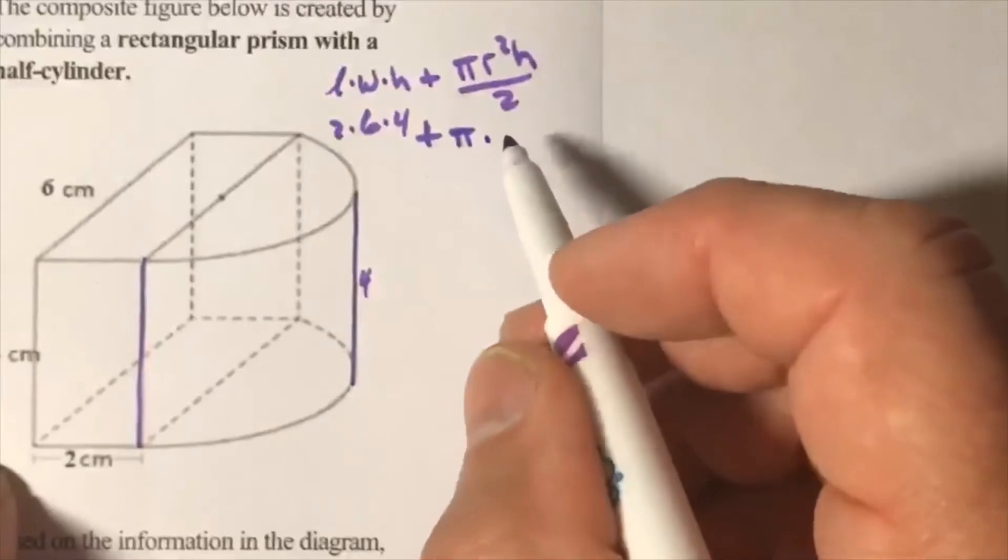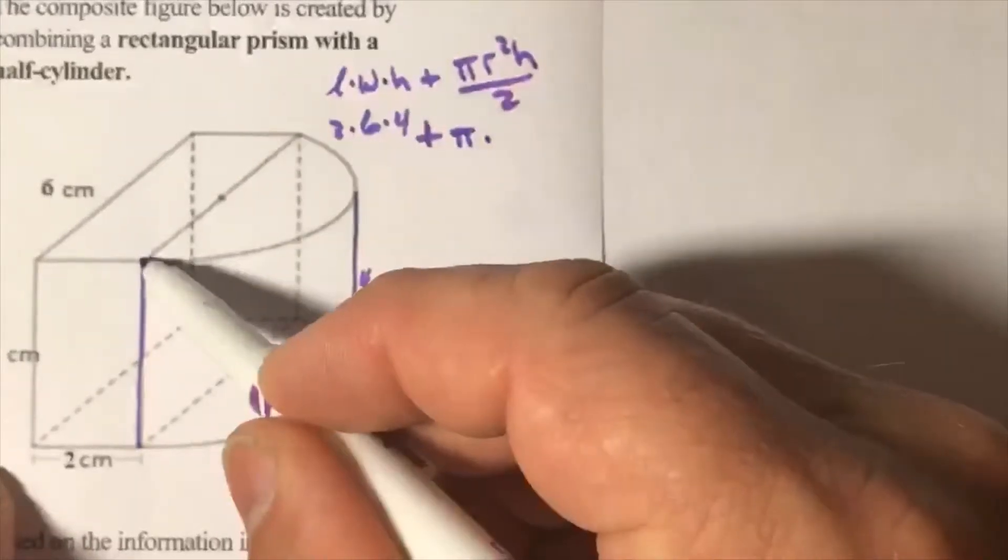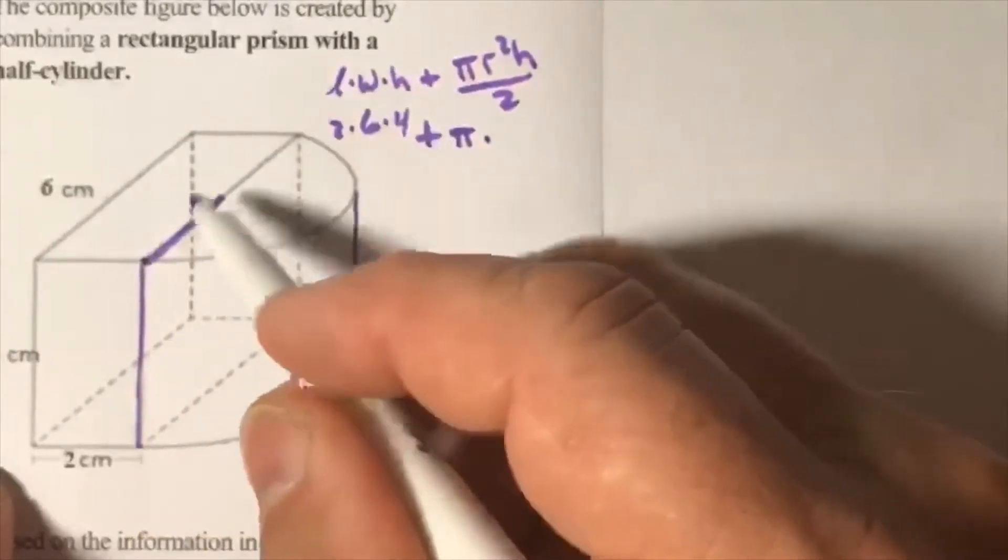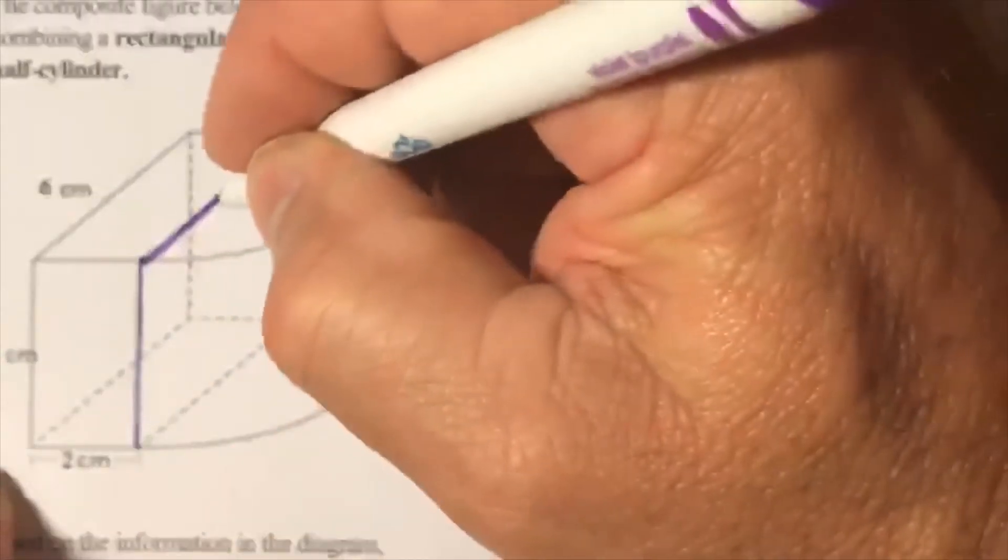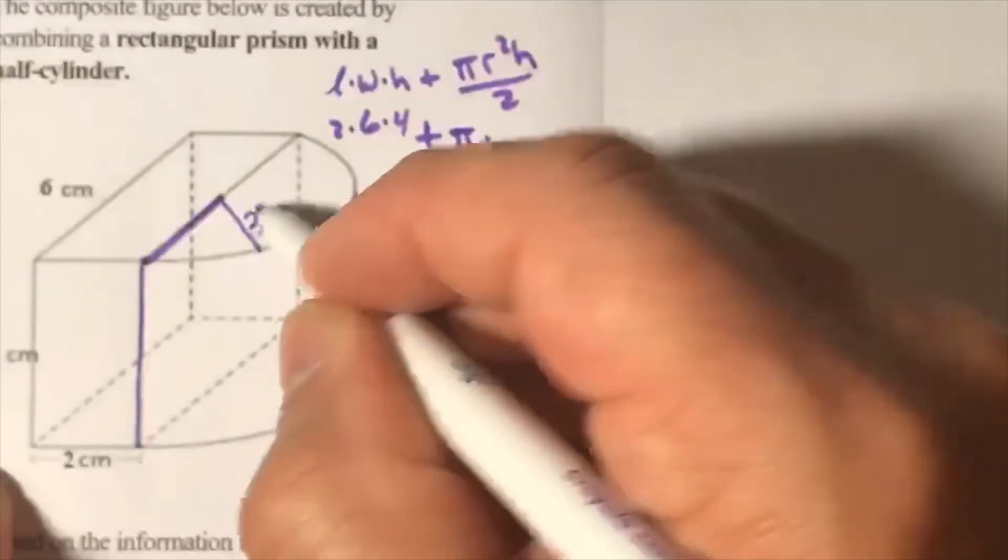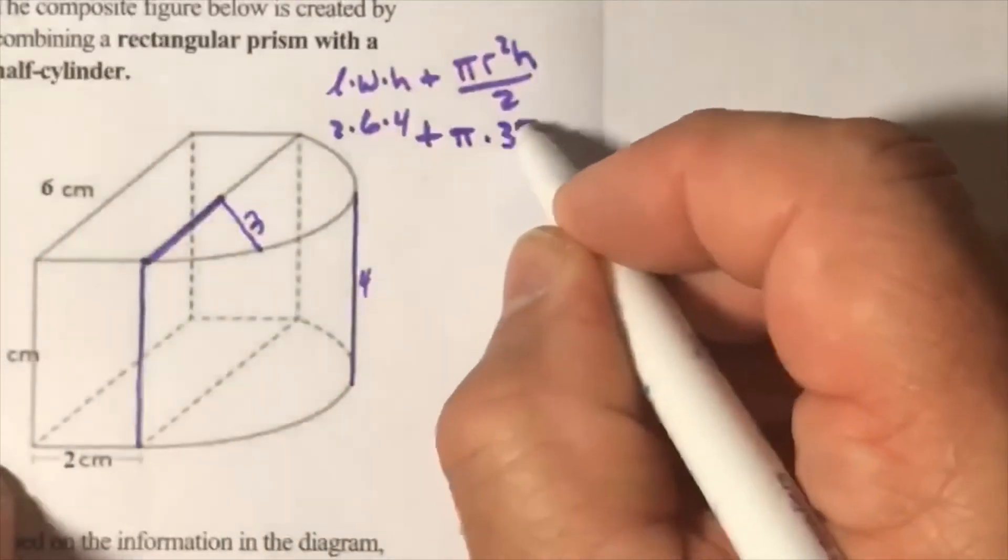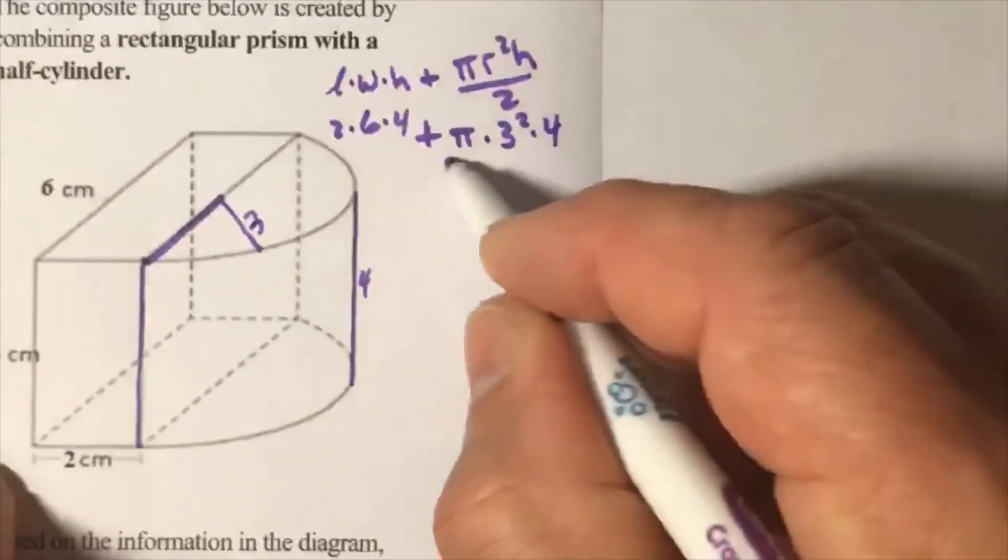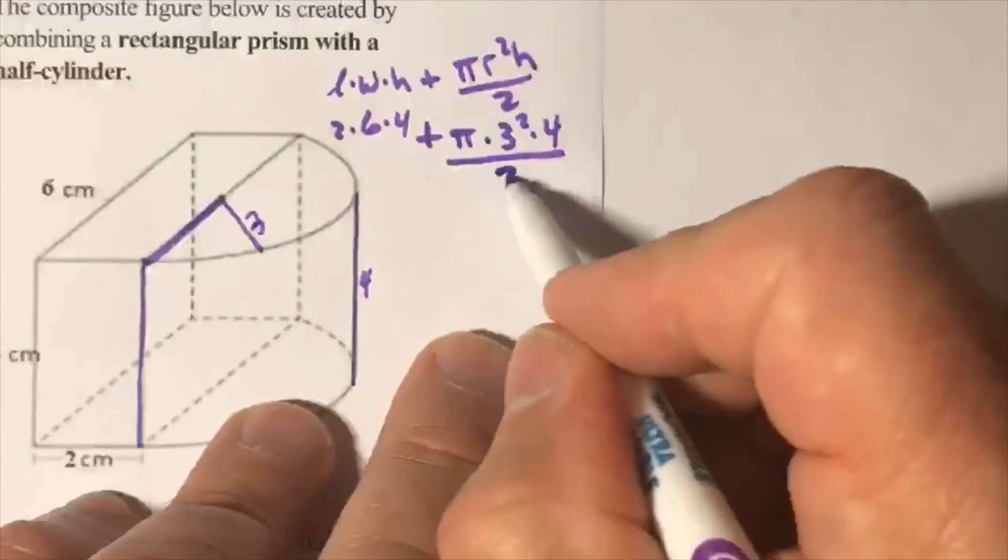Times the radius - well the radius is from the center to this point on the circle which is half of 6, that's 3. So the radius is 3. So 3 squared times 4, divide by 2. Finish this.